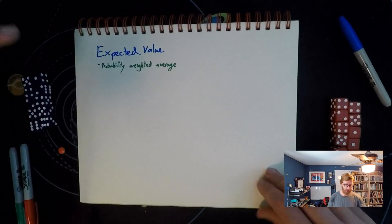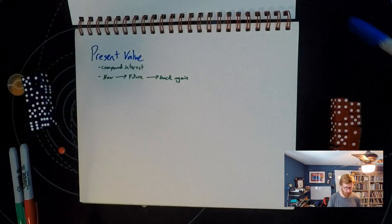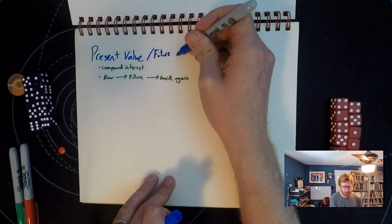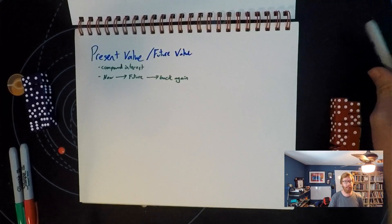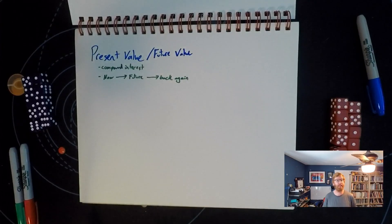So those concepts we're going to look at are expected value and present value slash future value. And what these are going to let us do is let us think about more complicated concepts, more complicated scenarios.